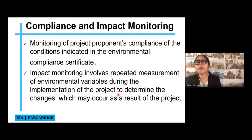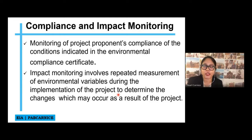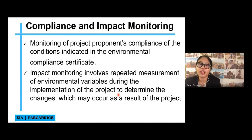Impact monitoring involves repeated measurement of environmental variables during the implementation of the project to determine the changes which may occur as a result of the project. For example, if you have a mining project affecting the water system of a certain area, there will be a regular assessment of the water quality in that specific area. That's an example of impact monitoring.